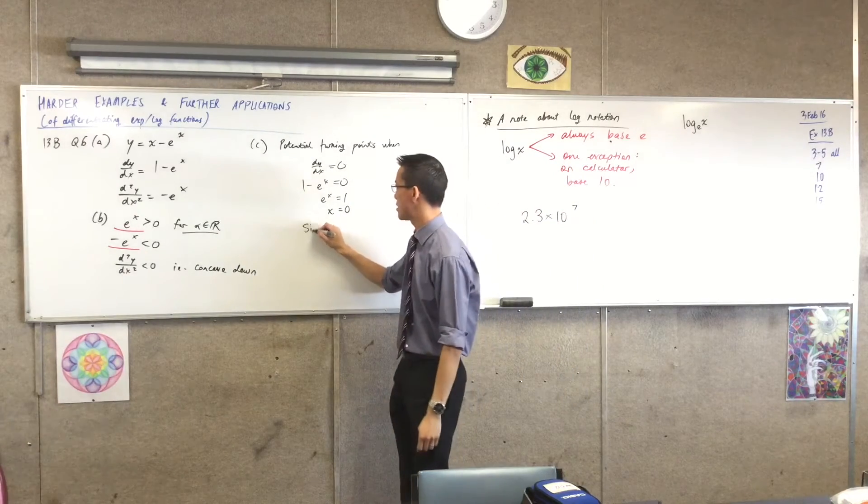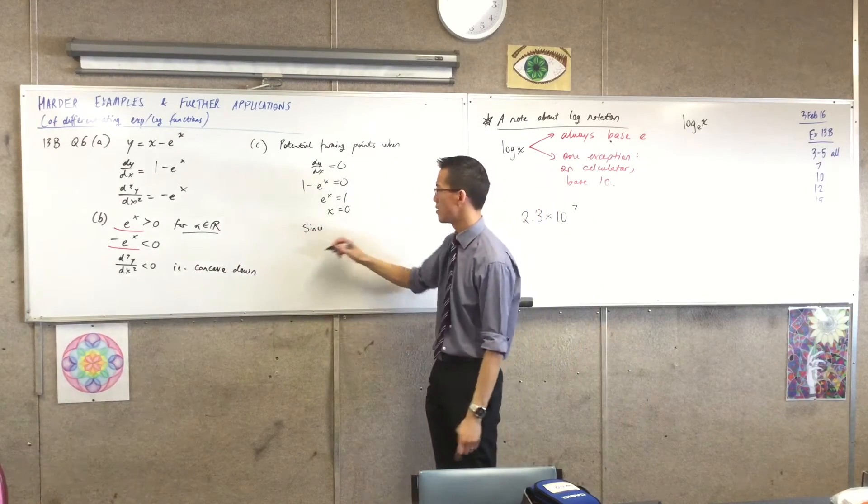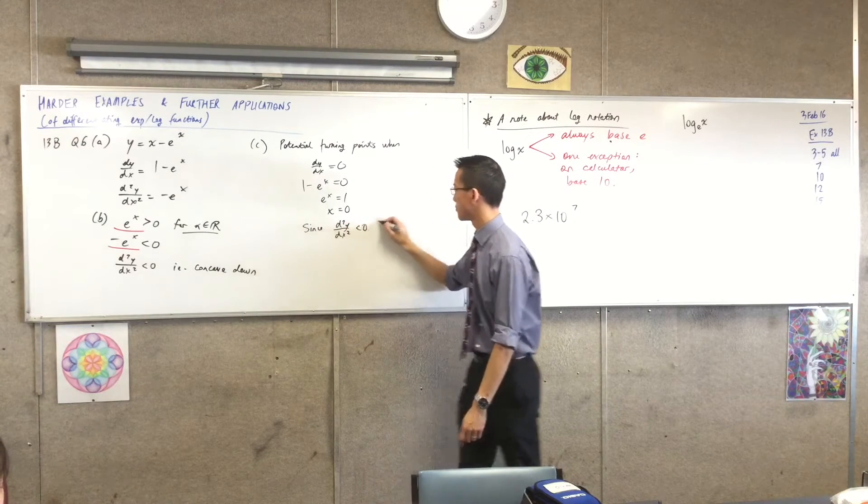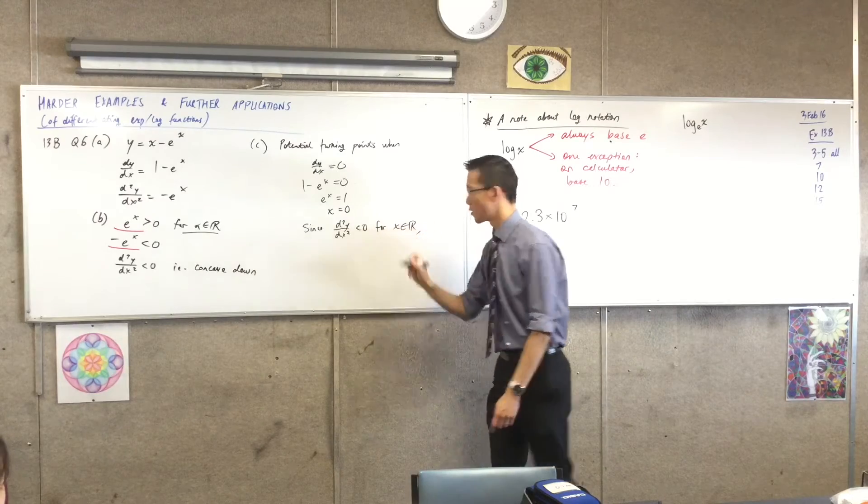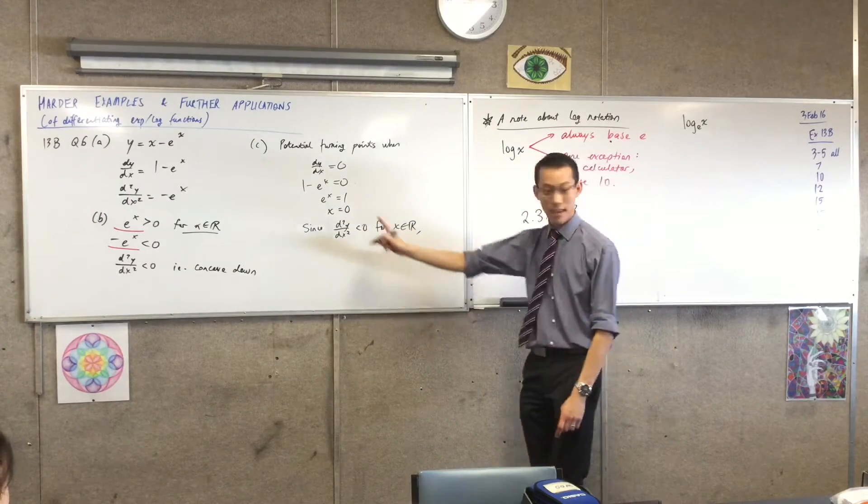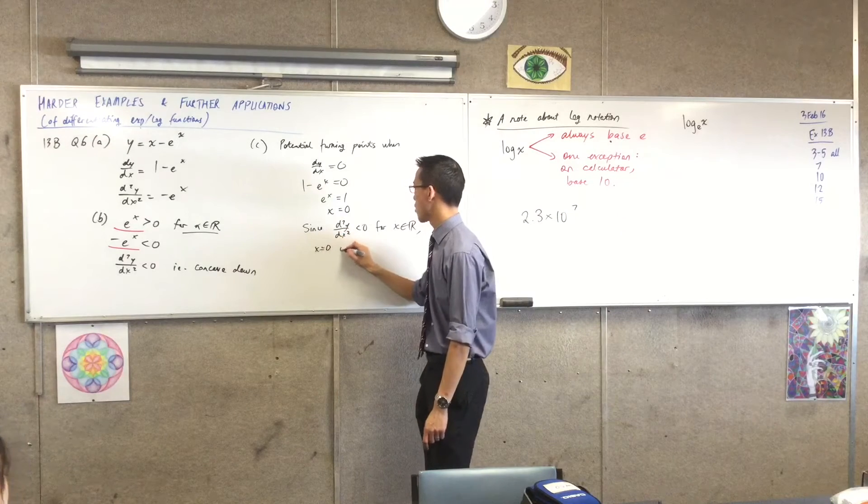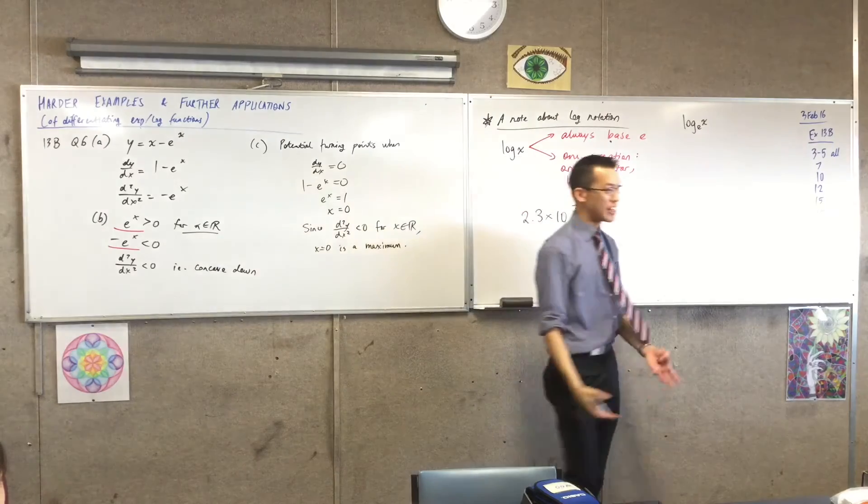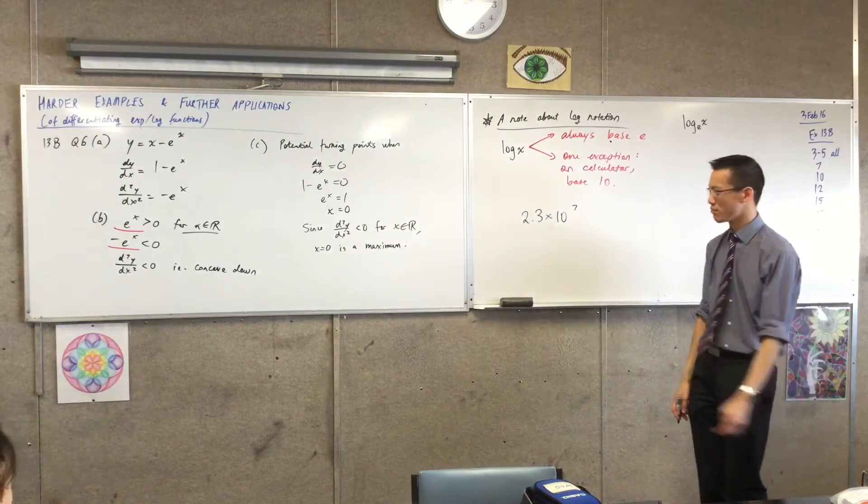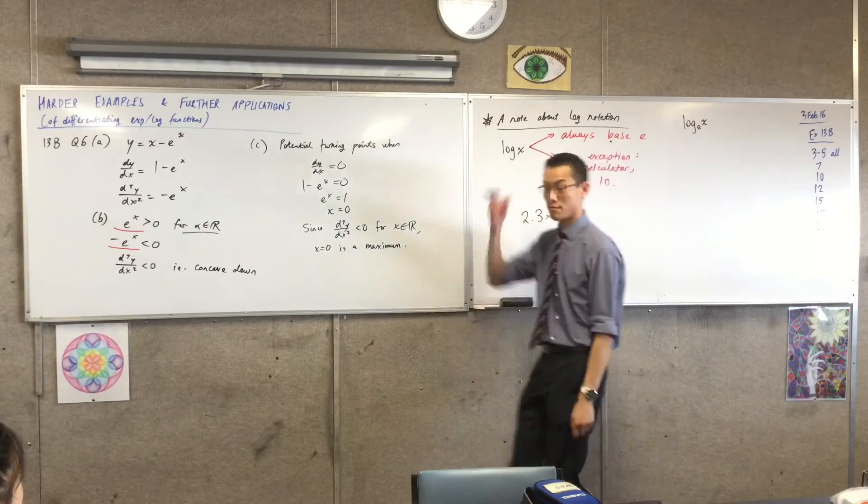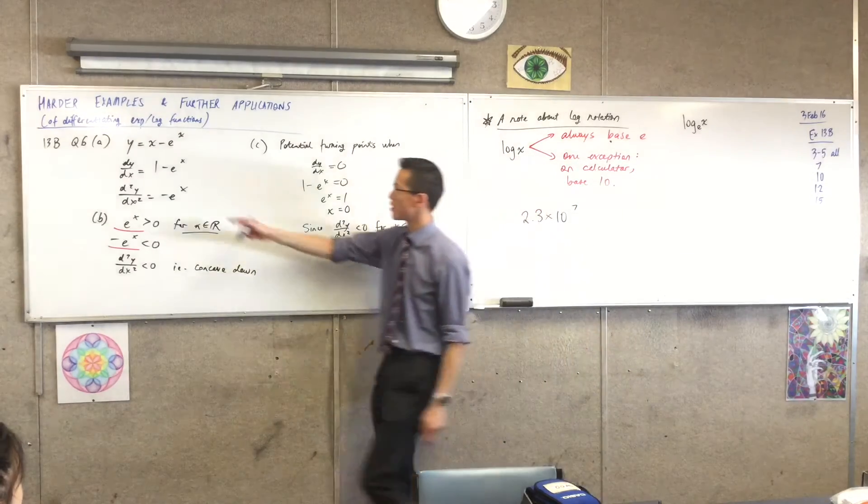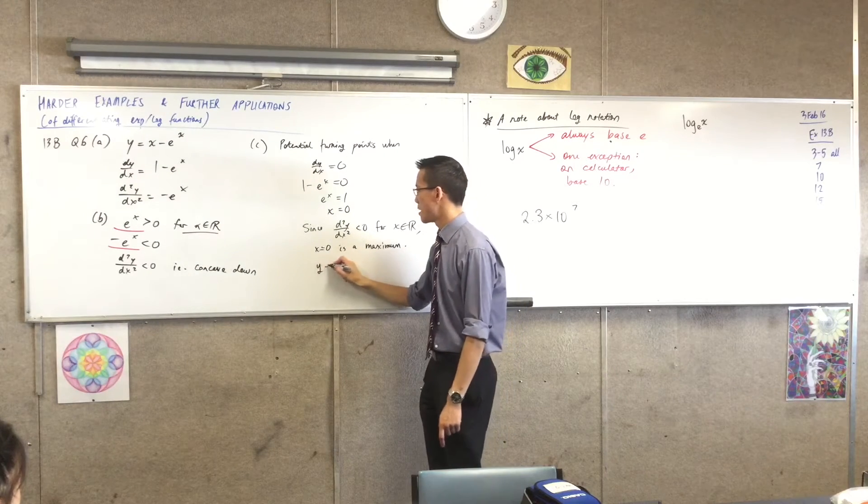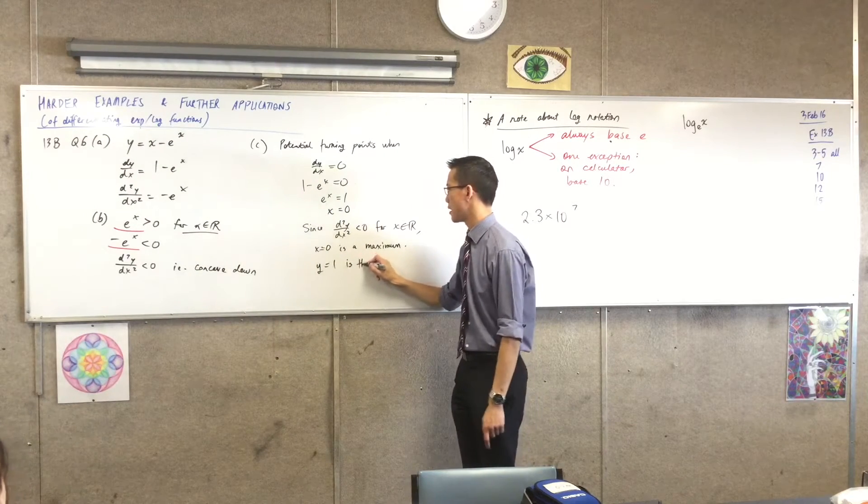So, I would just say, since that's already the case, and it's concave down, x equals zero is a maximum, or it's where a maximum occurs. Now, all I need is, what's the actual value? What is the value? It's negative one, isn't it? So, it's zero take away e to the zero, which is negative one. y equals negative one is the maximum value.